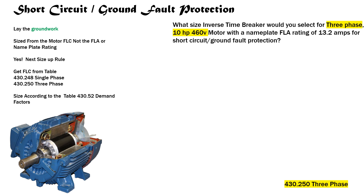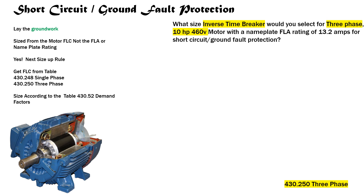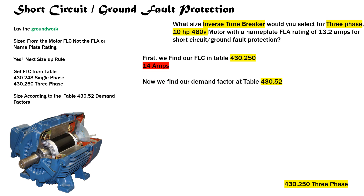The first thing to point out is that it's three-phase, 10 horsepower, 460 volt, and second, that it's an inverse time breaker. We'll find our FLC in table 430.250 — on the left-hand side we go down with our horsepower, then across the top to find our voltage, and we select our FLC. In this case it's 14 amps.